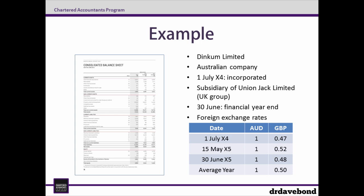In a foreign currency translation the aim is to translate the statements of an entity from one currency — in this case the functional currency of Dinkum, which is Australian dollars — to another, in this case the presentation currency of Union Jack, which is Great British Pounds.